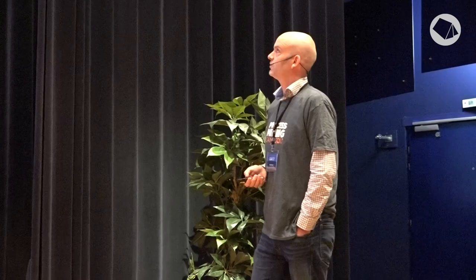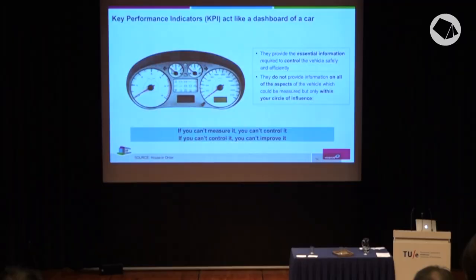KPIs are like the dashboard of a car. If you're driving the car, you need information to drive it — speed, distance — but you don't need all the information about the car, because you're only driving it. A mechanic, on the other hand, needs different information and has tools to read what is important for him. We have two types of KPIs: leading KPIs, which measure activities and input, and lagging KPIs, which measure results and output.